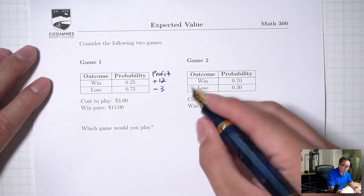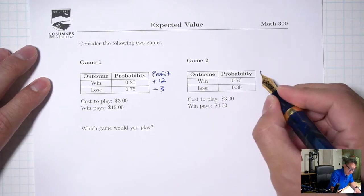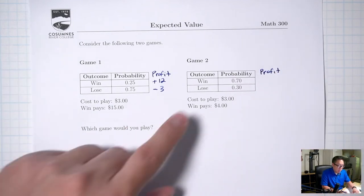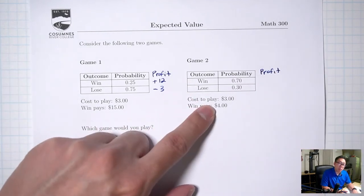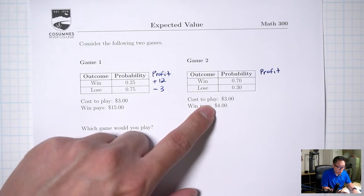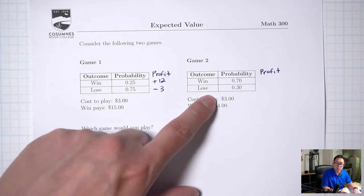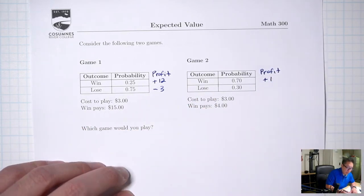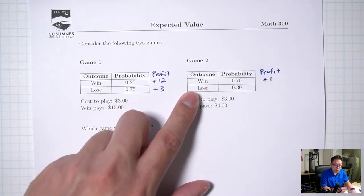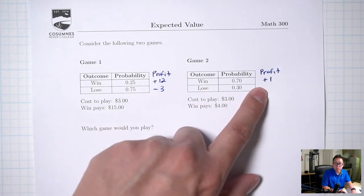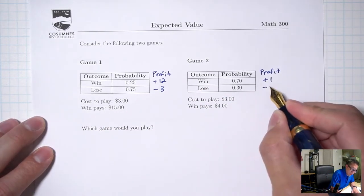Let's do the same thing for game two. If you win, you win $4, but you paid $3 to play already, so your actual profit is four minus three, which is plus one. If you lose, you lose the $3 that you paid, so you're down three, negative three.